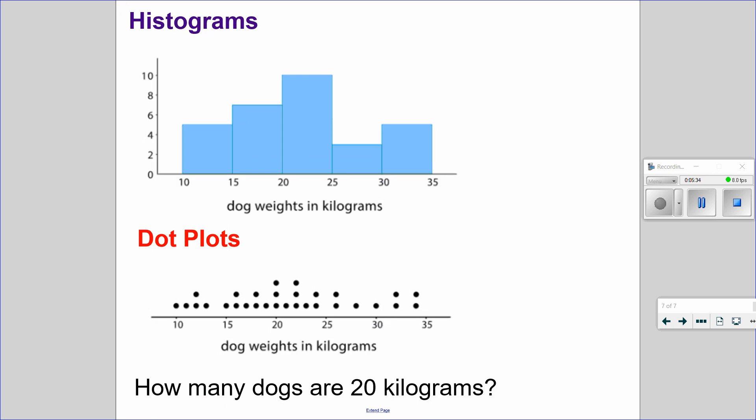How many dogs are 20 kilograms? On here, some of you are going to say it is seven. It is not seven. Remember, these range from 20 to 25. If you look right here, it is three dogs weigh exactly 20 kilograms.